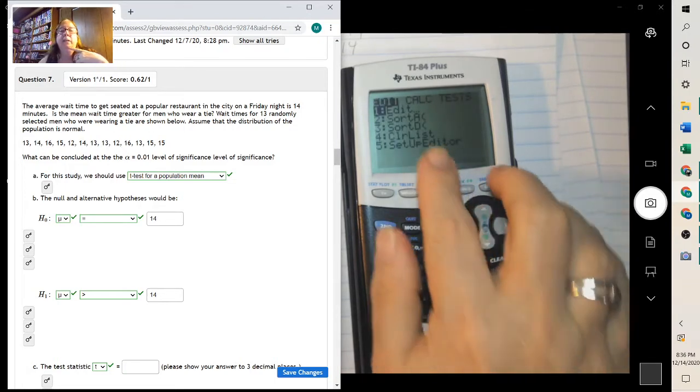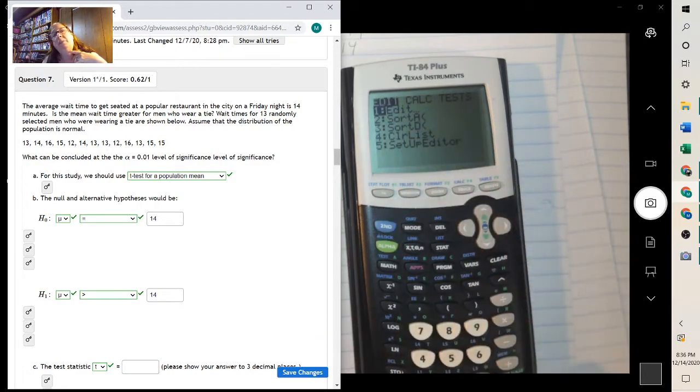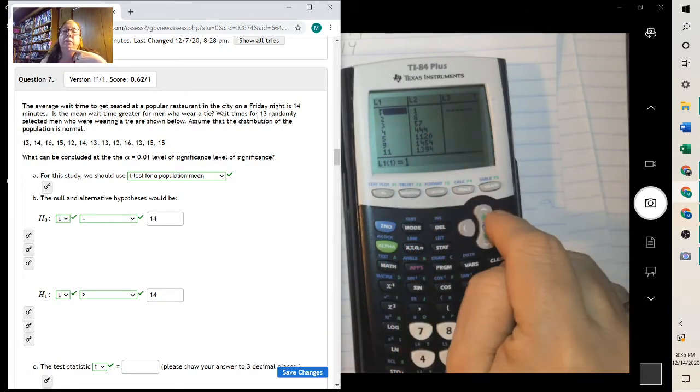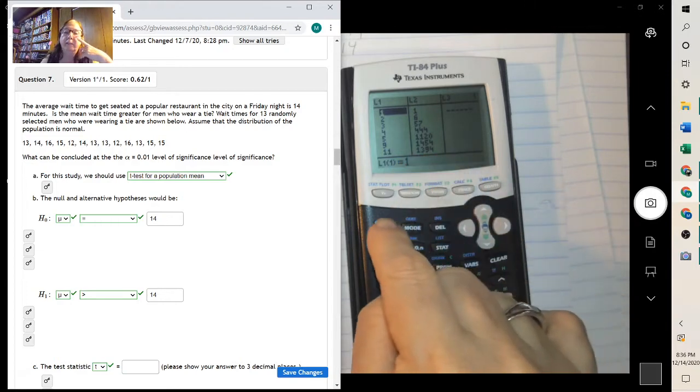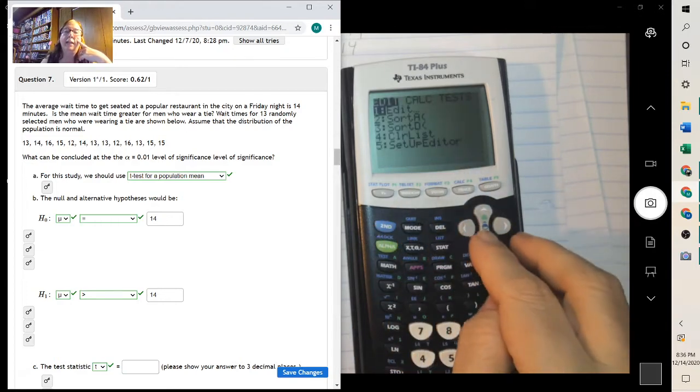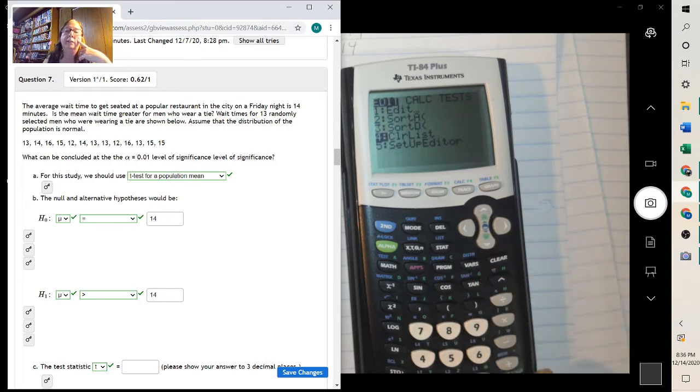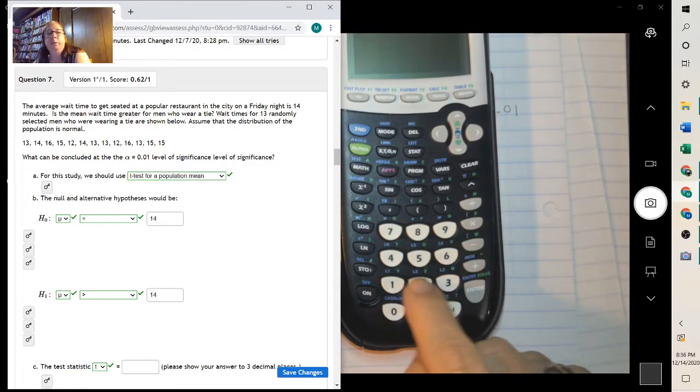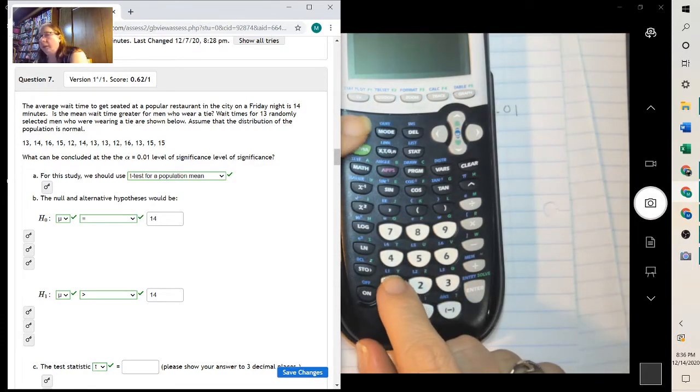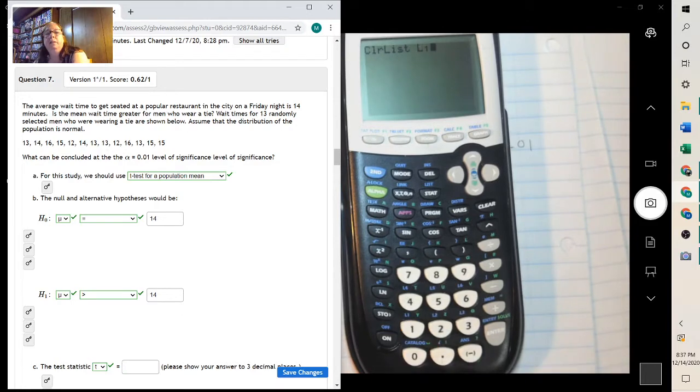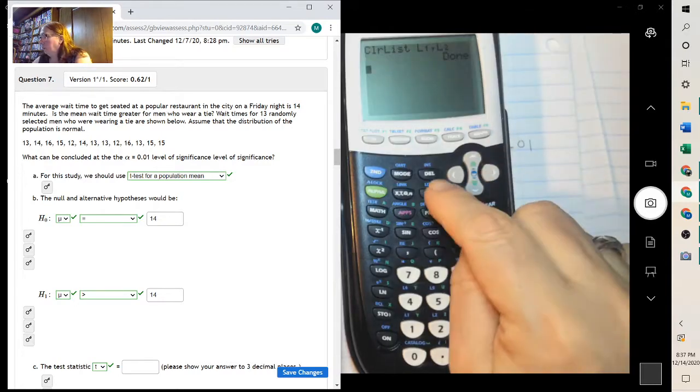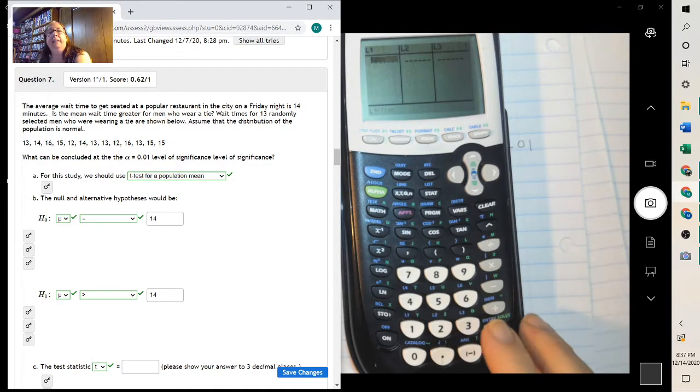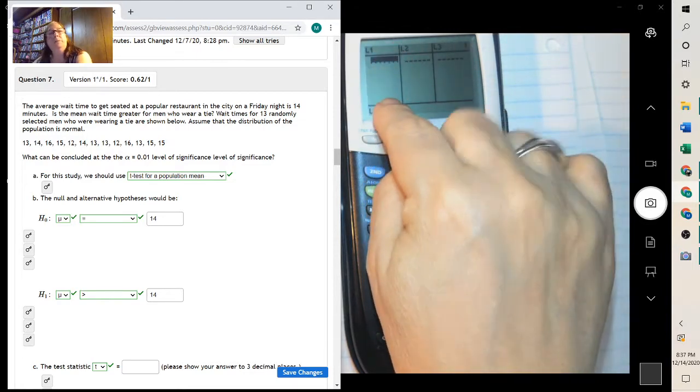Now, I think I have some stuff in there already. Notice I do. To clear that, second and quit, go back into stat and go to clear list. Hit enter. And then it was in the first and second list. Notice they're down here in blue. So second list, comma, second, and I'll get rid of both of them. So I don't have to worry about them. Then when you go back into stat and edit, now they're blank.